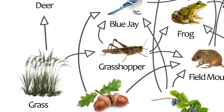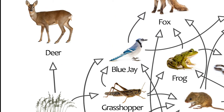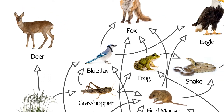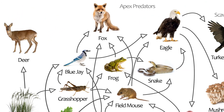Now we have two herbivores, being the grasshopper and the deer. We also have three omnivores, being the field mouse, the blue jay, and the fox. Omnivores are animals that eat both plants and animals. This means that these animals are in different levels of the food chain depending on the path. For example, the field mouse is a primary consumer and a secondary consumer since it eats plants and the grasshopper.